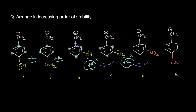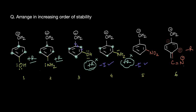Now let's look at the cyano group. CN is C triple bond N, and this carbon atom has no lone pair to donate to the benzene ring, so it is definitely not a +R group. However, because nitrogen is more electronegative than carbon, the pi electrons can shift towards nitrogen, creating an empty orbital on the carbon, which can then pull electrons from the benzene ring. So a cyano group is a minus-R group — it withdraws electrons from the benzene ring.